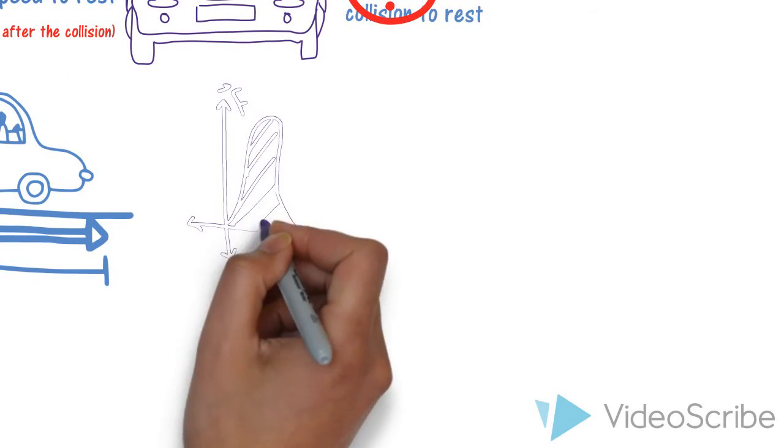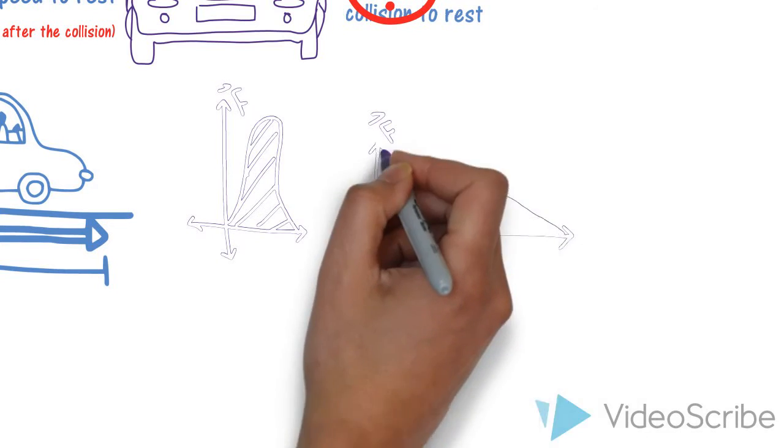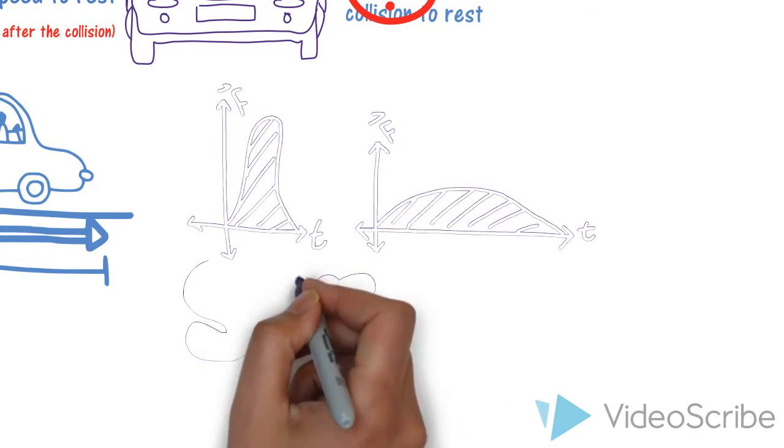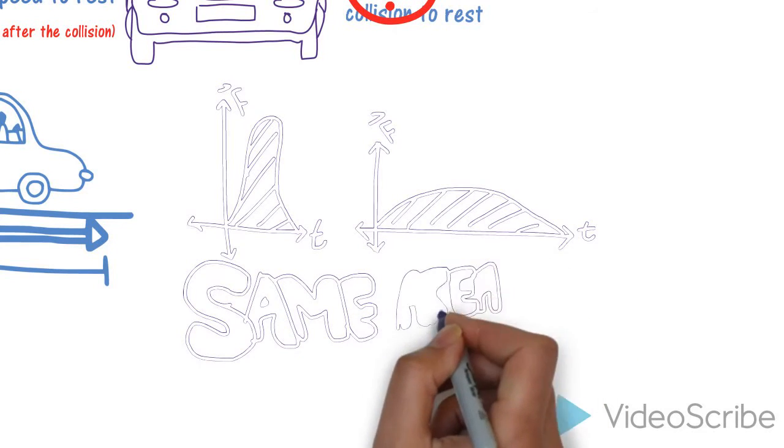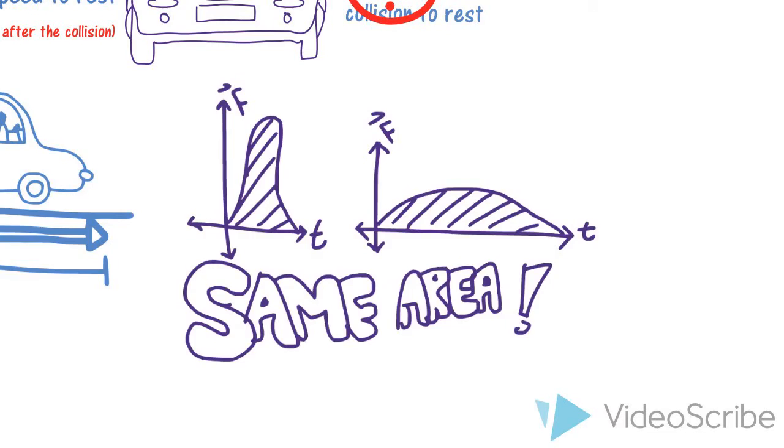We can graph this with a force-time graph. If your stopping time is short, your force is much higher than if you have a longer stopping time. The area under both graphs are the same and are equal to the change in momentum.